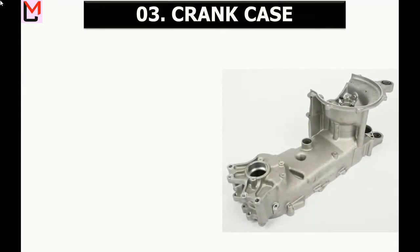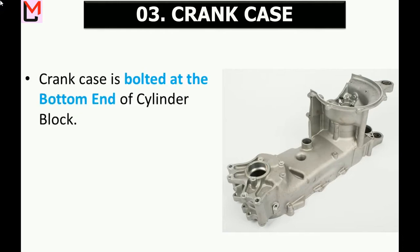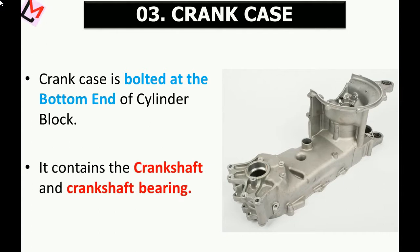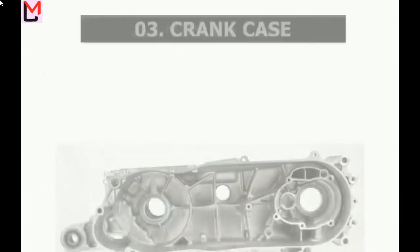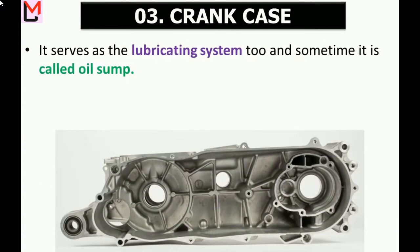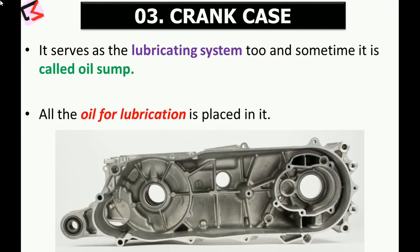The third and most important part is the crankcase. Here you can see how the crankcase looks. The bottom end of the cylinder block is closed by means of the crankcase, which is bolted onto the cylinder block. The crankcase contains the crankshaft and crankshaft bearings. It also serves as a lubricating system and is sometimes called the oil sump — all the oil for lubrication is placed in the crankcase.